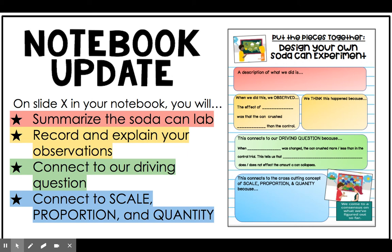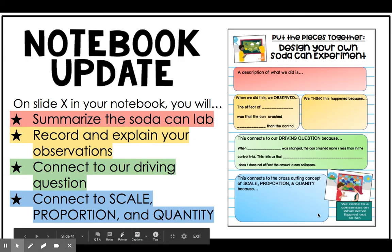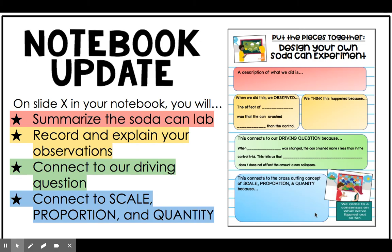Every time we do an investigation, you are going to get a page that looks like this. This is the putting the pieces together part of our science learning routine. Every time we put the pieces together, you will describe what we did, record your observations and why you think this happened, connect to the driving question on slide 11 in your notebook, and then connect to our cross-cutting concept for the unit. In this last section of the video, we're going to look at a couple of examples of how you can connect the results of your soda can experiment to scale, proportion, and quantity.